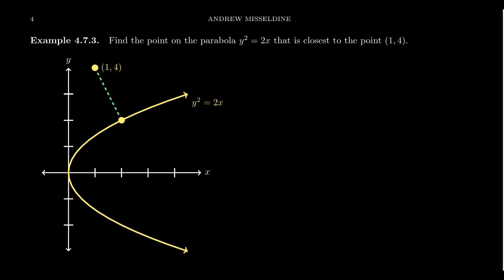So on the picture, you can kind of see an estimate of where that closest point might be. And so if we're looking for a point that's closest to the point, what we're trying to do here is we're trying to minimize distance. And so if you're trying to minimize distance, we're going to have to use the distance formula in order to make that work.